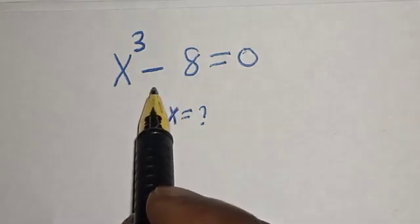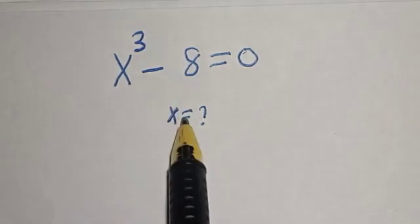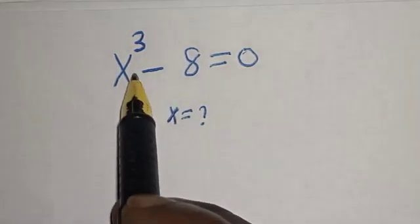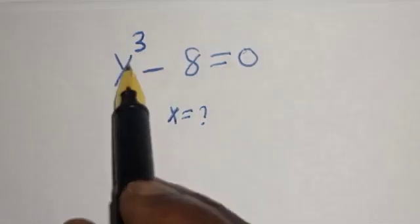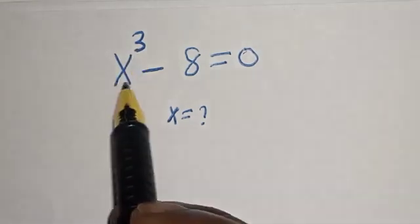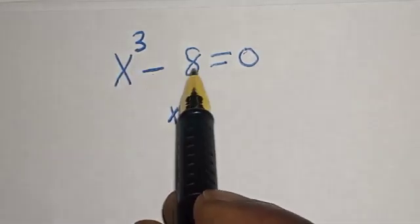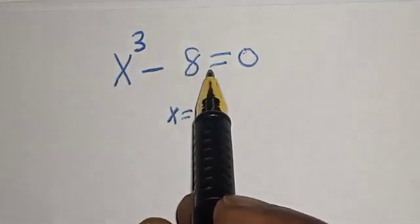Hello, welcome to Magist. In this class we want to find the value of s from this equation: s raised to power 3 minus 8 is equal to 0.